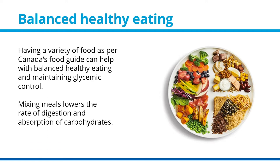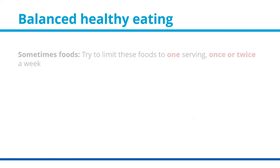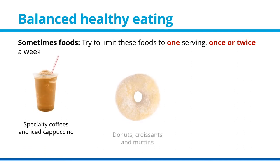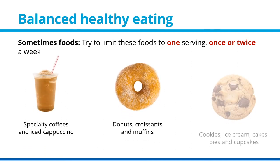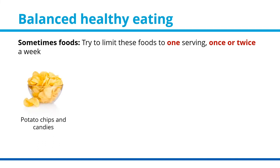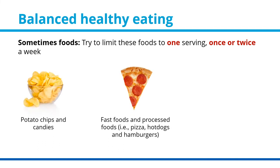Mixing foods lowers the rate of digestion and absorption of carbohydrates. Balanced healthy eating also includes "sometimes foods" — try to limit these to one serving once or twice a week. They include specialty coffees and iced cappuccinos, donuts, croissants, muffins, and cookies; ice cream, cakes, and pies; potato chips and candies; fast foods and processed foods such as pizza, hot dogs, and hamburgers; and popsicles and freezies. These foods typically have a high glycemic ranking.